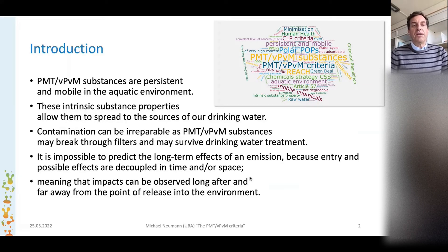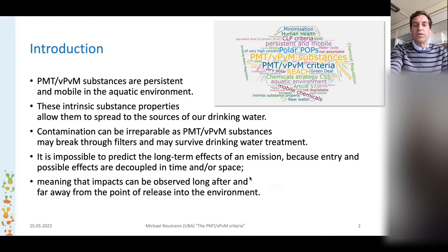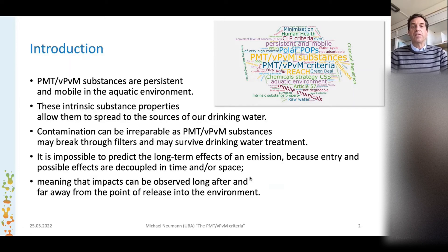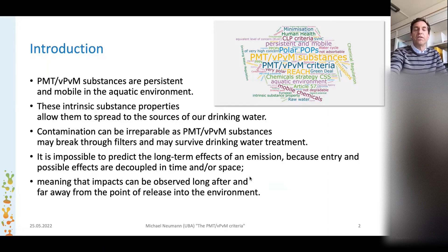As an introduction, PMT/vPvM substances are persistent and mobile in the aquatic environment. These intrinsic substance properties allow them to spread to the sources of our drinking water, and contamination can be irreparable as PMT/vPvM substances may break through filters and may survive drinking water treatment. It's also common knowledge that it's impossible to predict the long-term effects of an emission, because entry and possible effects are decoupled in time and/or space, meaning the impact can be observed long after and far away from the point of release into the environment.